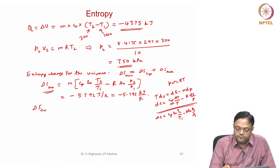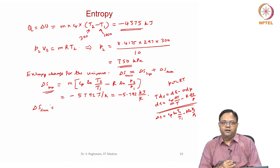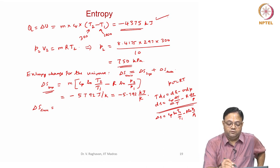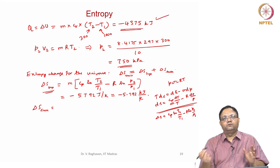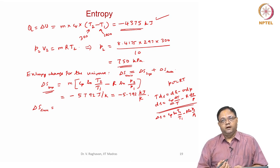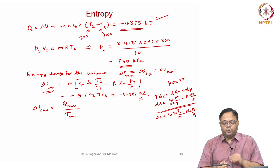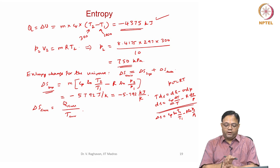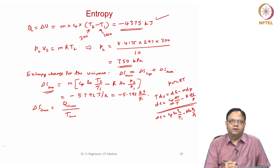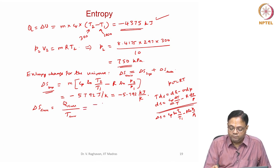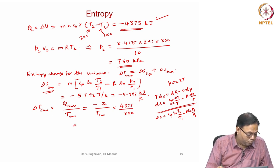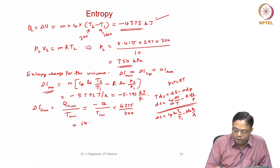For the surroundings: there is a heat transfer — the system rejects some heat which is received by the surroundings. The surrounding temperature is constant at 300 Kelvin. So the entropy change for the surroundings equals Q_surroundings / T_surroundings, which equals minus Q_system divided by T_surroundings. This equals 4375 divided by 300, which equals 14.58 kJ/K.